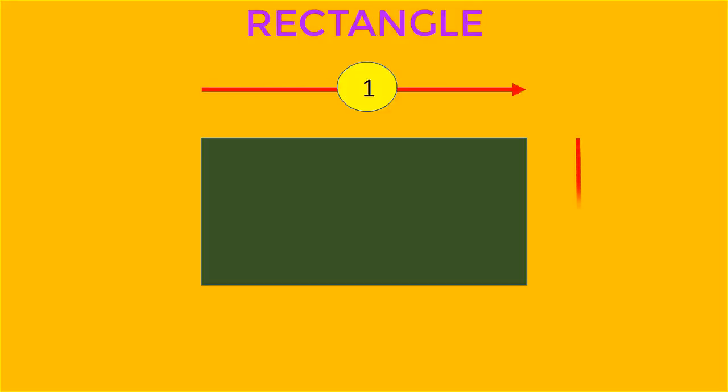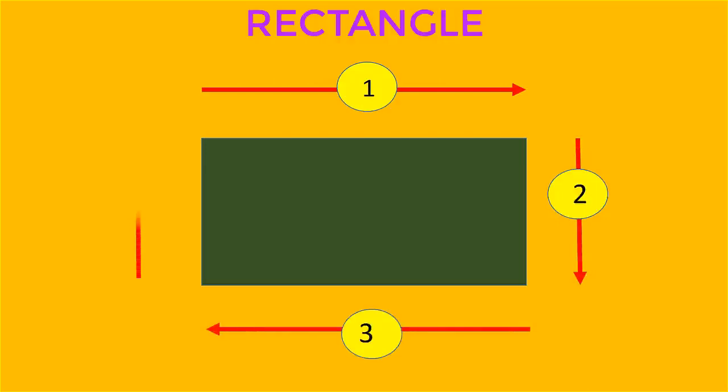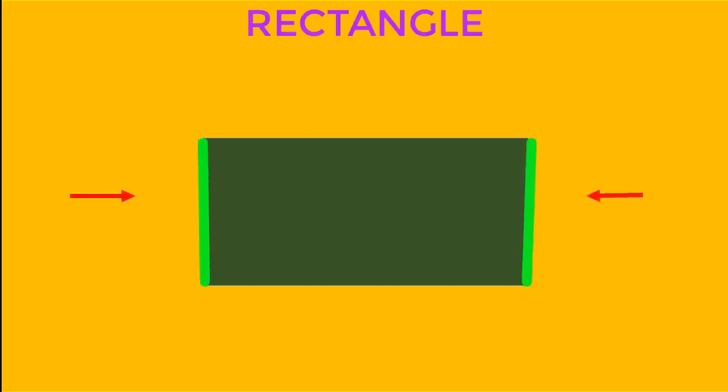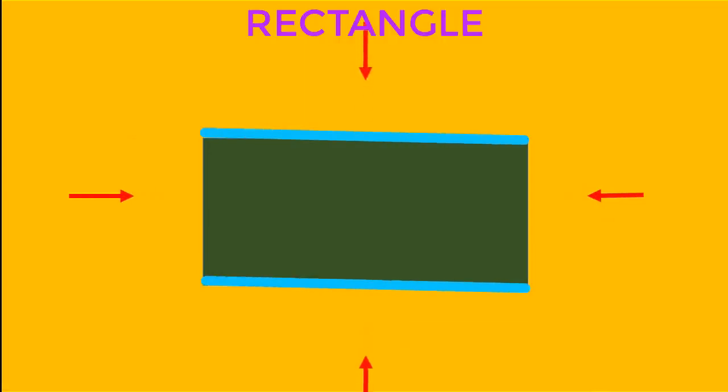Rectangle is a closed figure. It has 4 sides: 1, 2, 3 and 4. Opposite sides of a rectangle are equal.